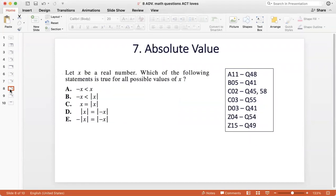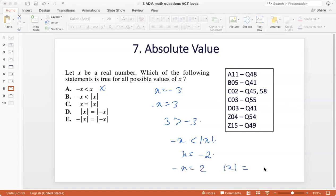Then you had absolute value. Absolute value questions made up eight questions out of all of these tests that I looked at. I have a sample question here. Let x be a real number, which of the following statements is true for all possible values of x? -x < x is not true. If x is negative 3, then -x is 3 and 3 is greater than -3. -x is less than |x| is also not true. Let's say x is -2, so then -x is 2 and |x| is also 2. So they are equal, it's not less. x = |x| will be true only when x is greater than or equal to zero, so this is not true for all x.